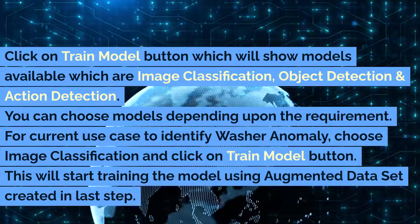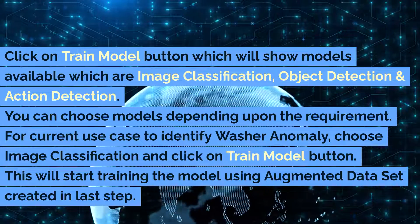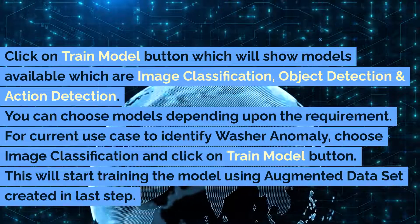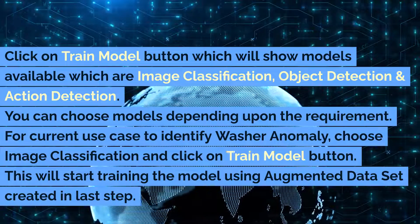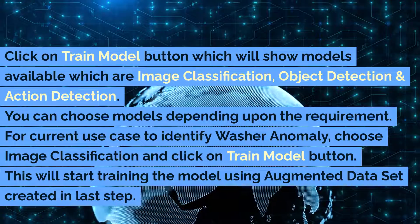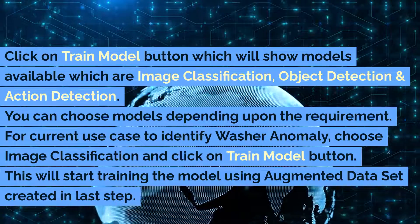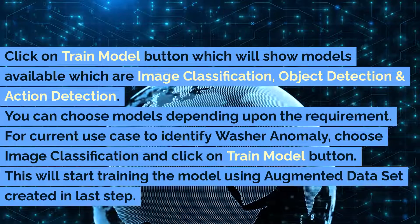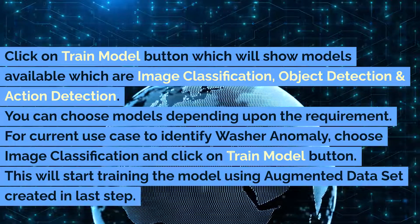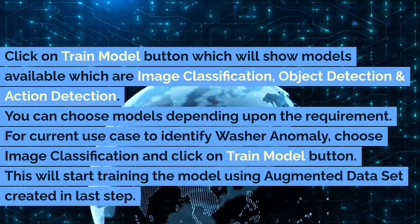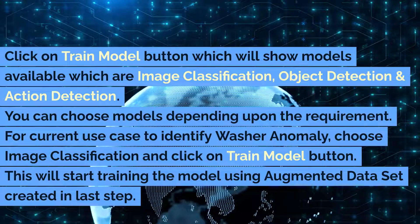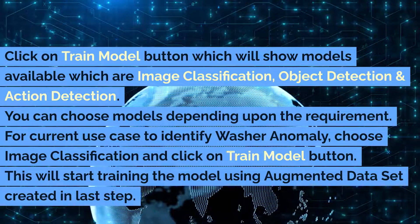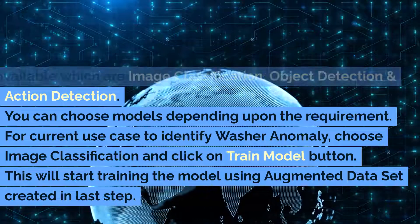Click on the Train Model button, which will show the available models: Image Classification, Object Detection, and Action Detection. You can choose models depending upon the requirement. For the current use case to identify washer anomaly, choose Image Classification and click the Train Model button. This will start training the model using the augmented dataset created in the last step.